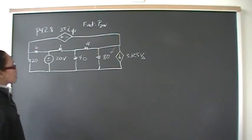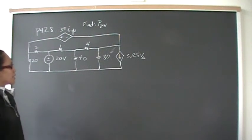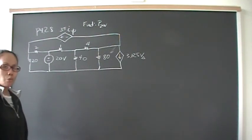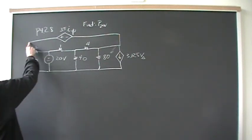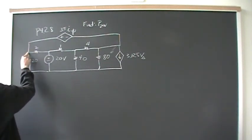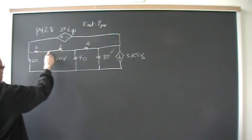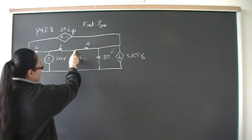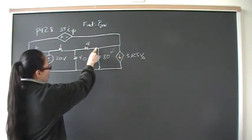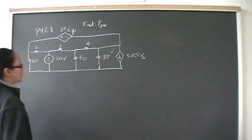First, let's identify all the essential nodes in this problem. Remember, an essential node is a node that connects three or more circuit elements. So here we have one, two, three — that's one essential node. Then a second, third, and fourth essential node, and this is the fifth essential node.